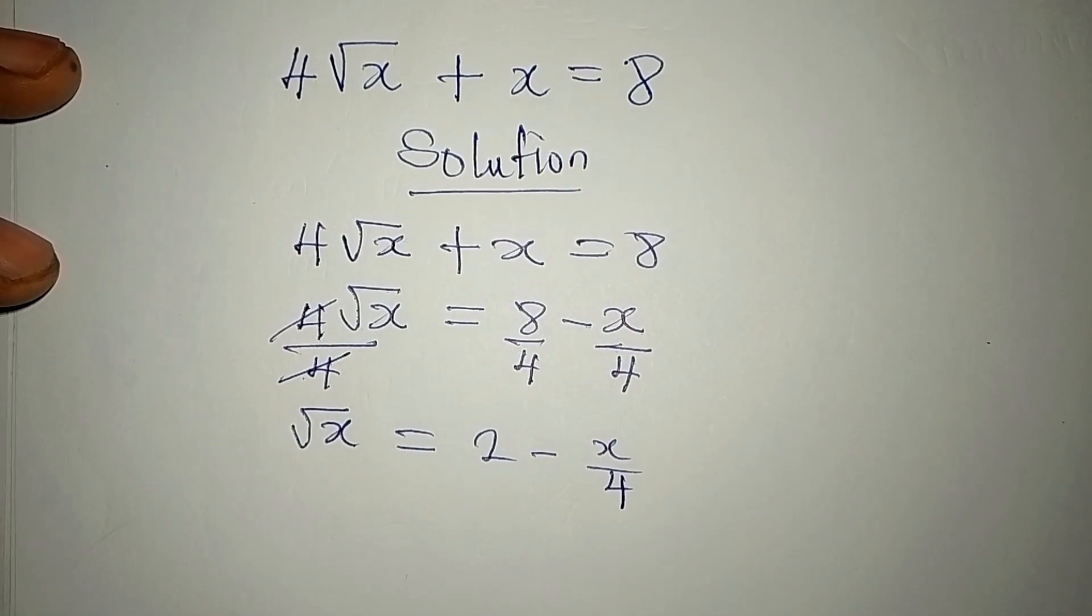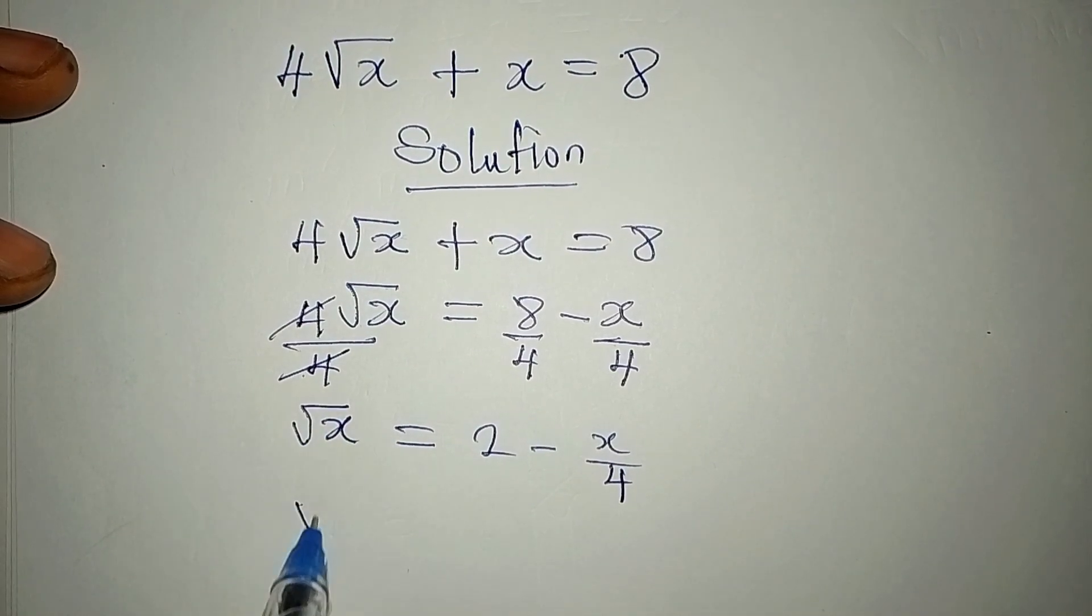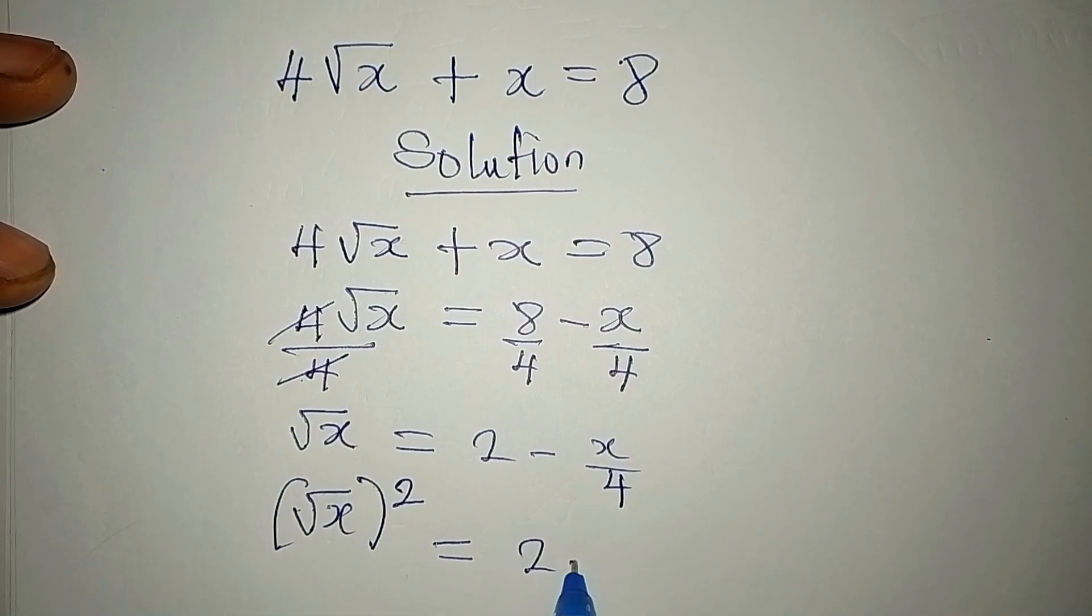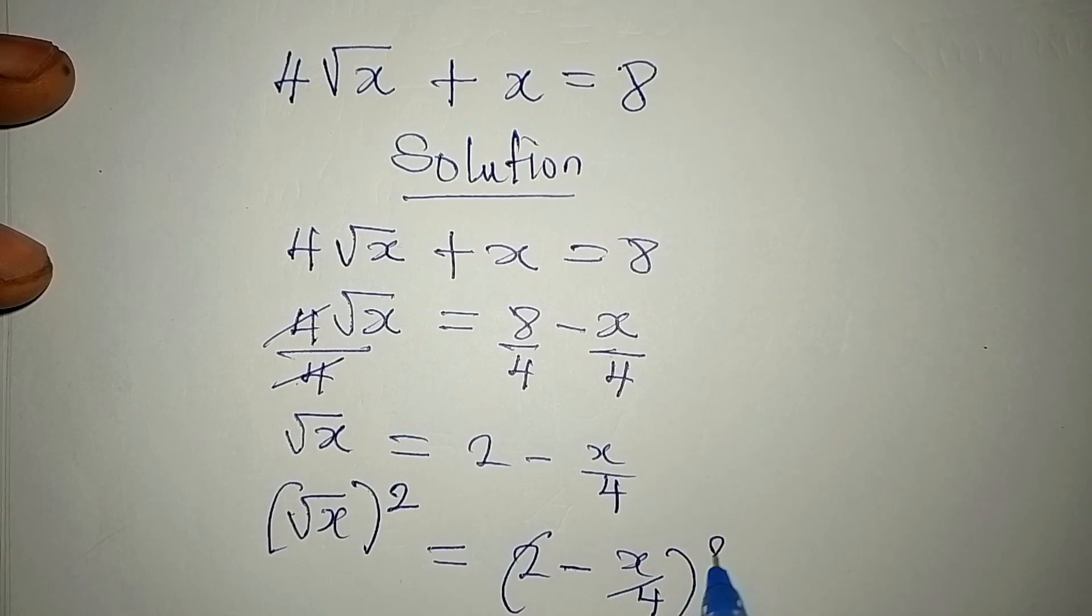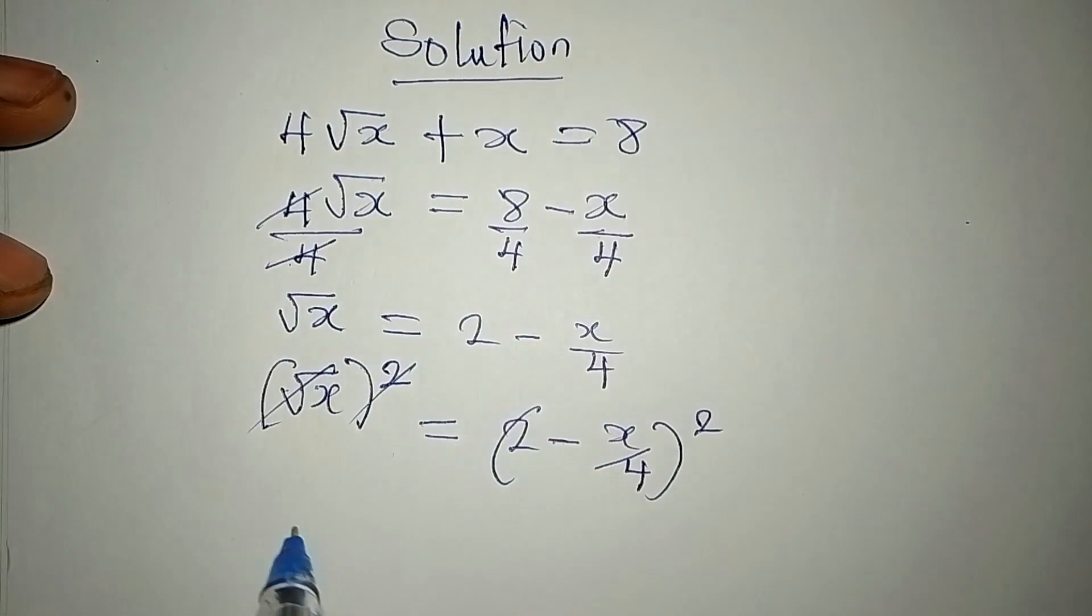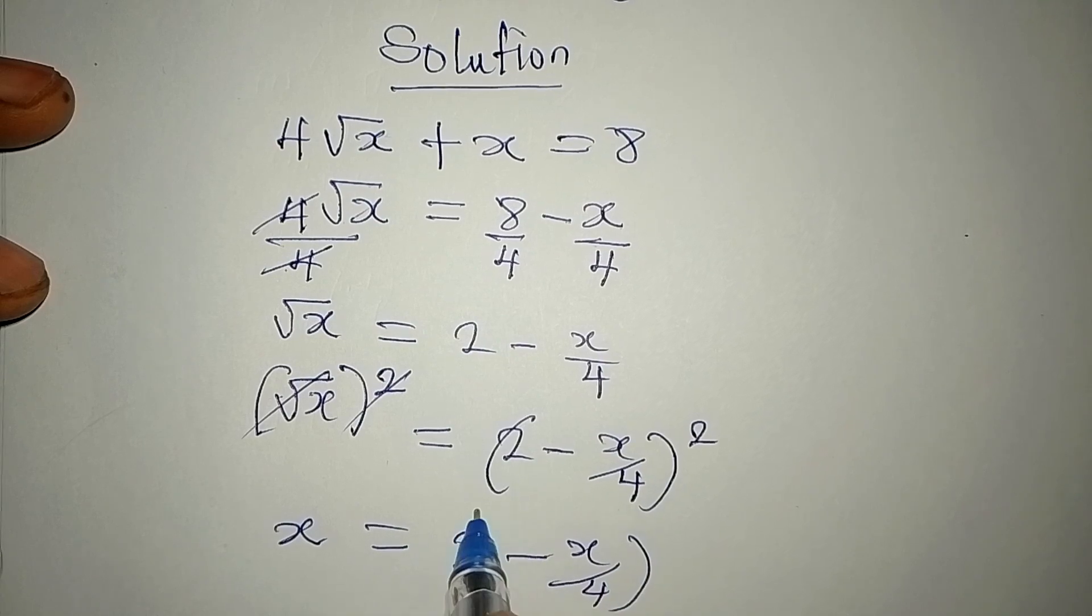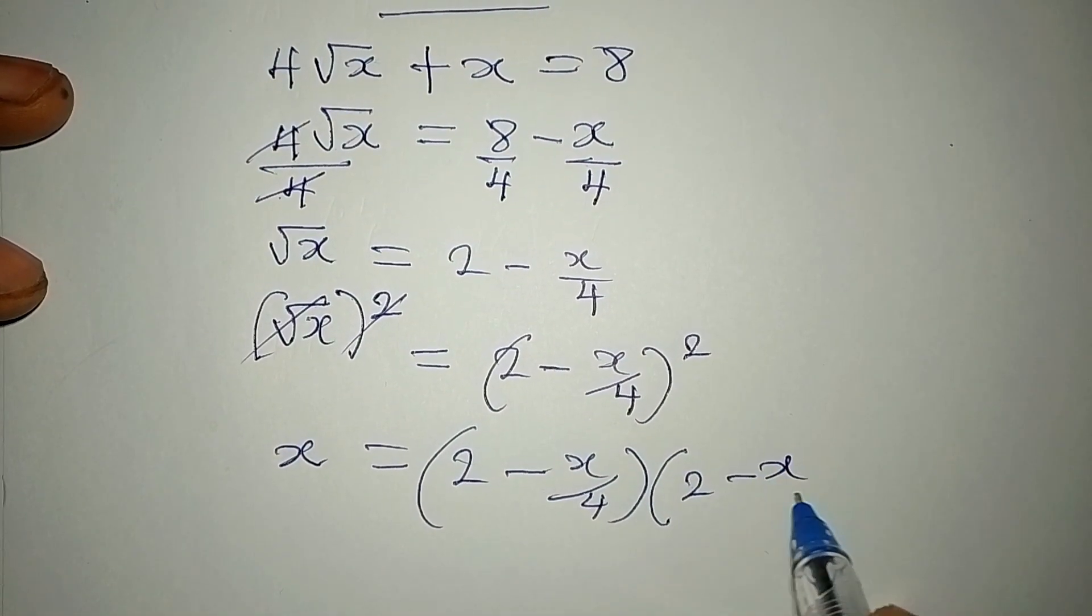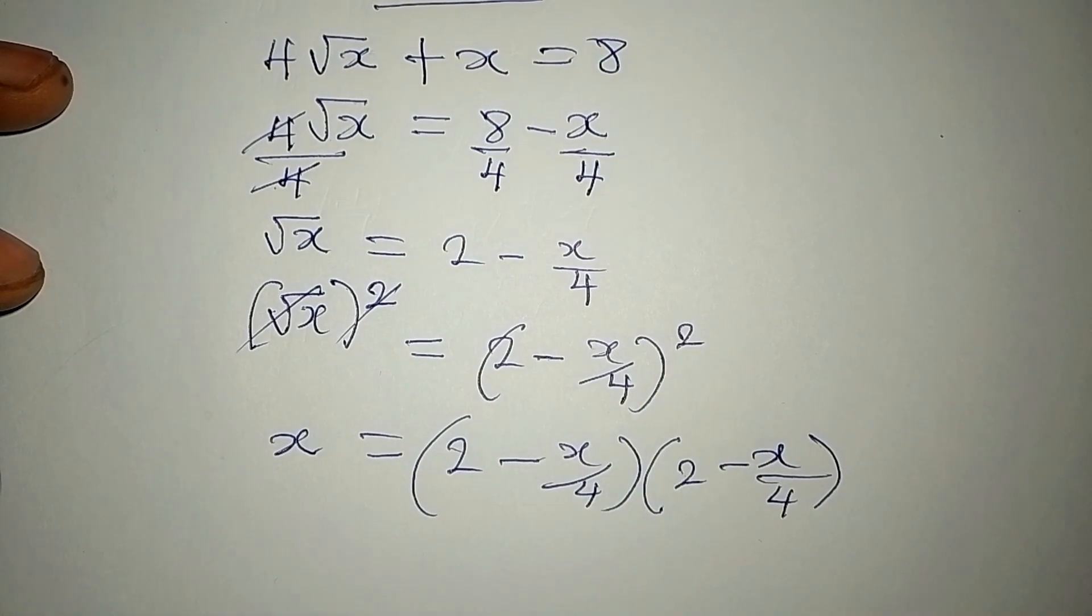Remember that we can remove this square root by squaring it, then equal to 2 - x/4. This is raised to the power of 2. And this means this can go so that x is equal to (2 - x/4) multiply by (2 - x/4), and this is because of the square on it.